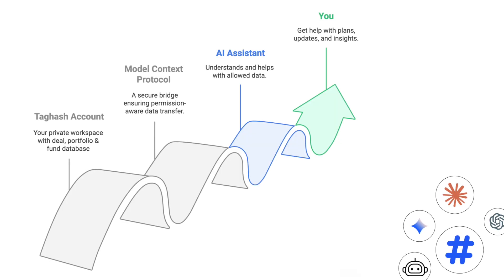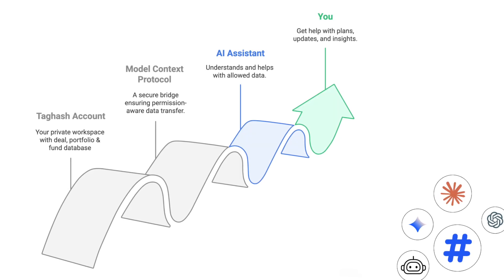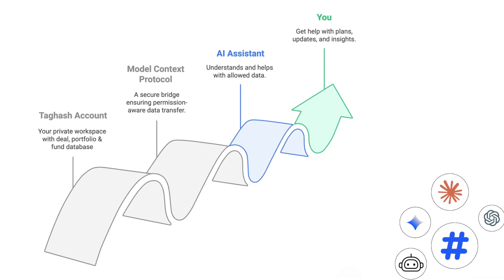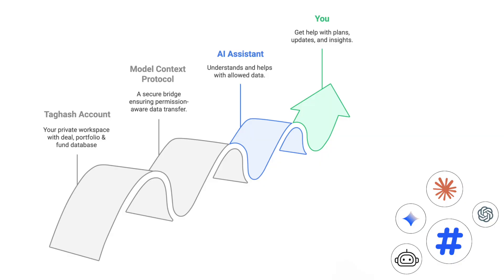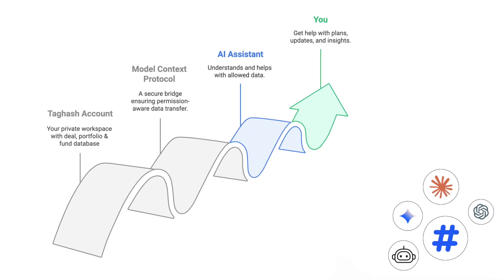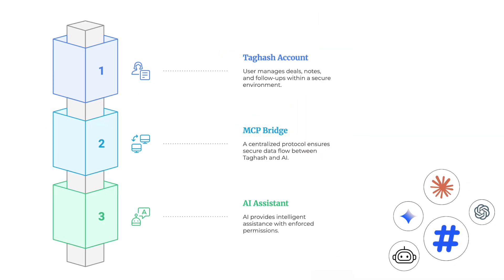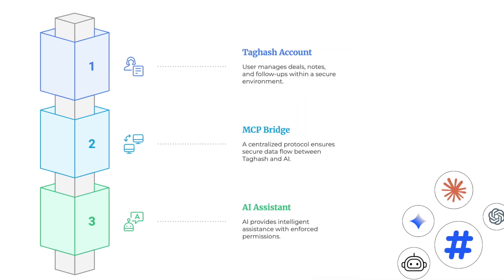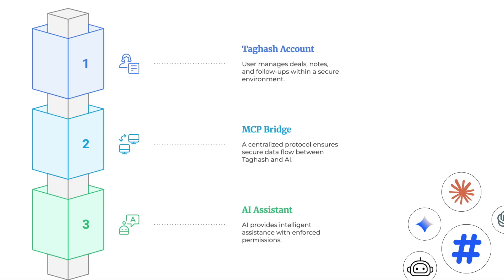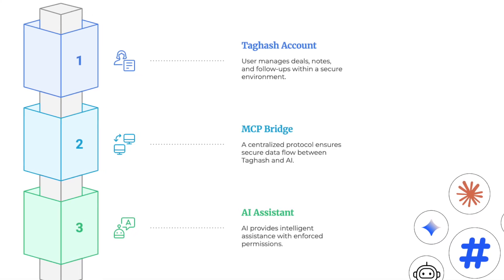MCP, or model context protocol, is a secure industry-standard way to let your AI tools access your Tagash account. With the right context — your pipeline, notes and activity — the AI finally becomes useful. Actually very useful. Let's see what it can do.